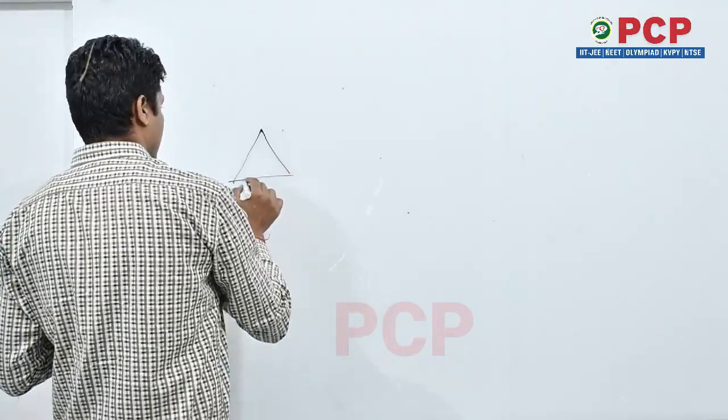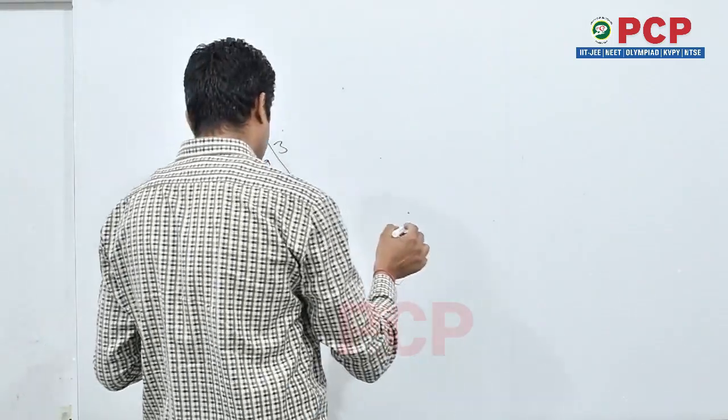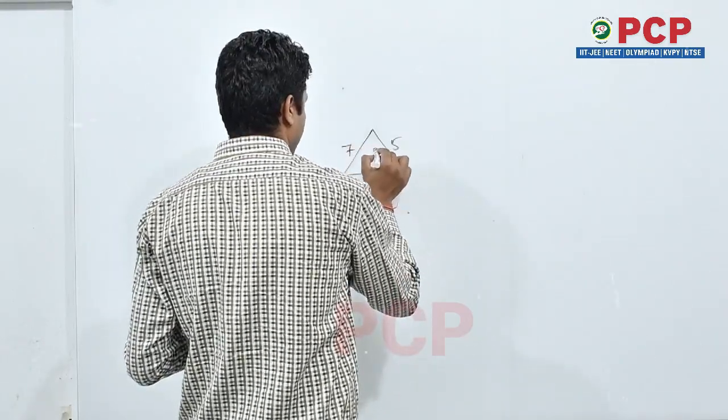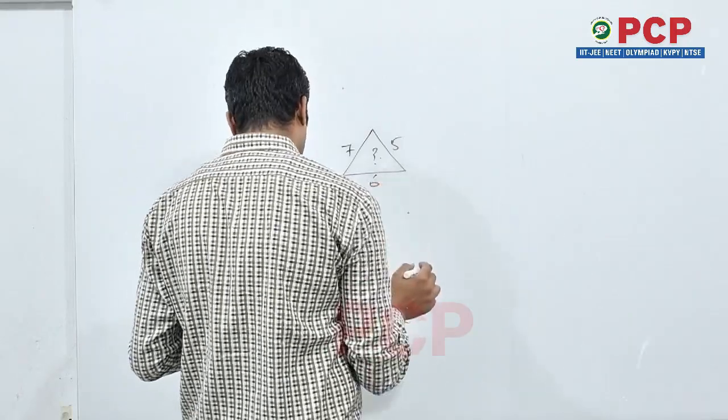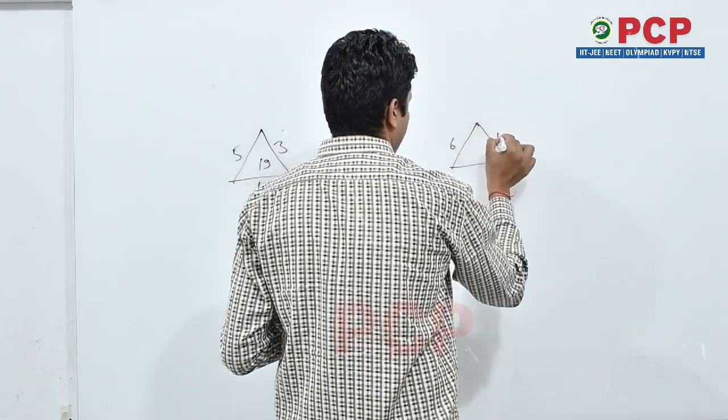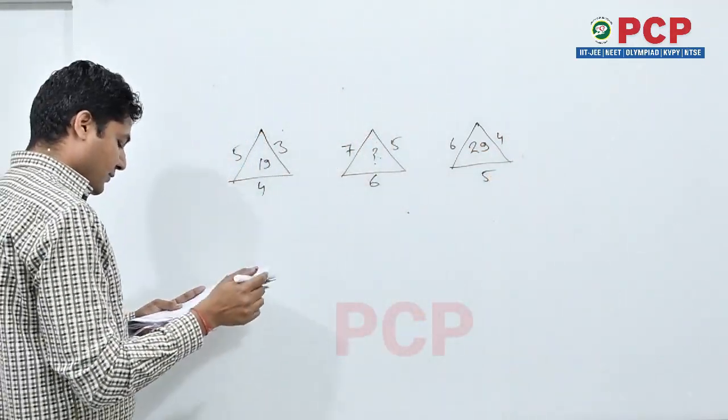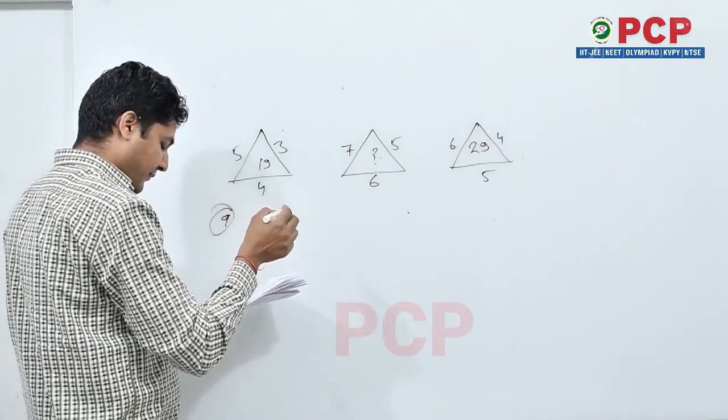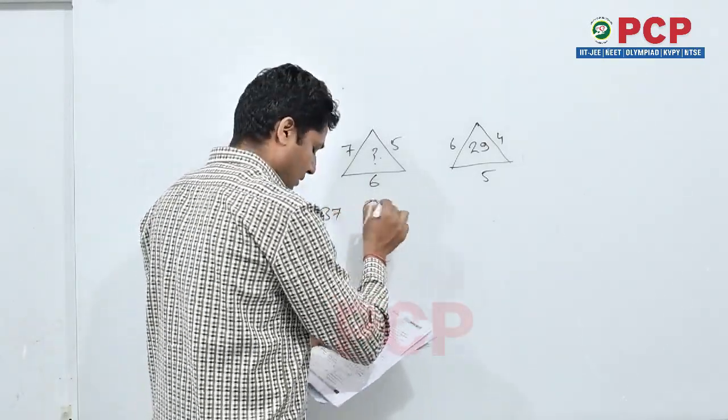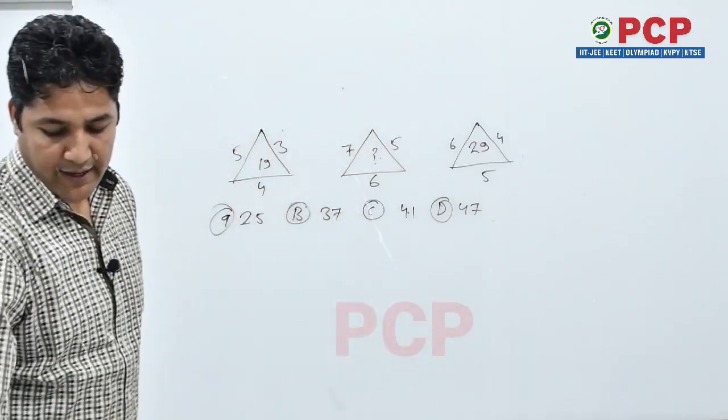Next question. Triangle. 5, 3, 4, 19, 7, 5, question mark, 6, 6, 4, 29. First of all, option is A 25, B option is 37, C option 41, and D option 47. Try to solve it.